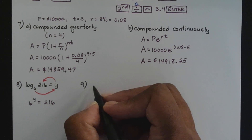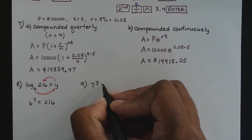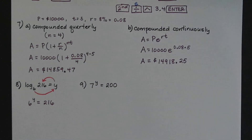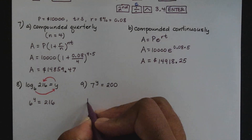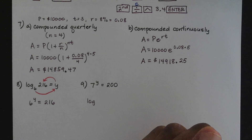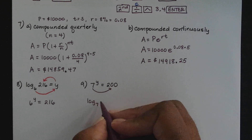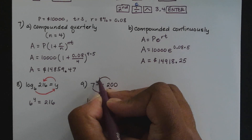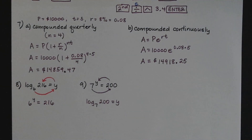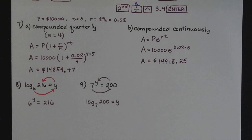Number 9: convert the exponential form 7 to the power of y equals 200 to its equivalent logarithmic form. The base 7 becomes the subscript for the log, the argument is the number after the equal sign which is 200, and the exponent y becomes what the log equals. So in logarithmic form: log to the base 7 of 200 equals y. Keep in mind that the logarithm means exponent.